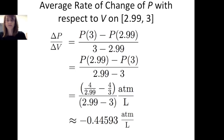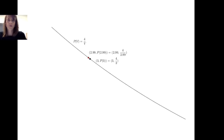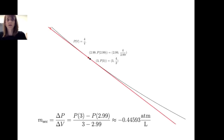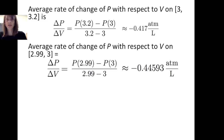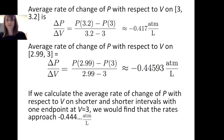On this shorter interval, the two points on the graph are closer together. The average rate of change of pressure with respect to volume on the interval from 2.99 to 3 is the slope of the secant line connecting (2.99, p(2.99)) and (3, p(3)). By continuing to calculate the average rate of change on shorter intervals — each containing 3 as an endpoint — the average rates of change approach −0.4̄ units of atmospheric pressure per liter.